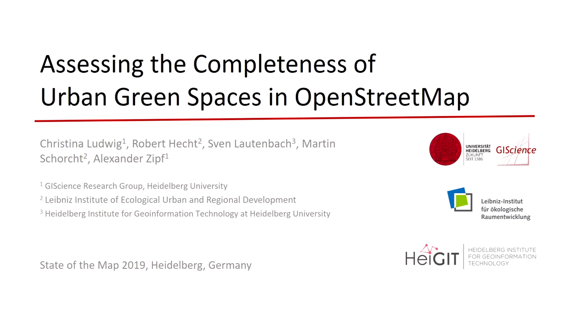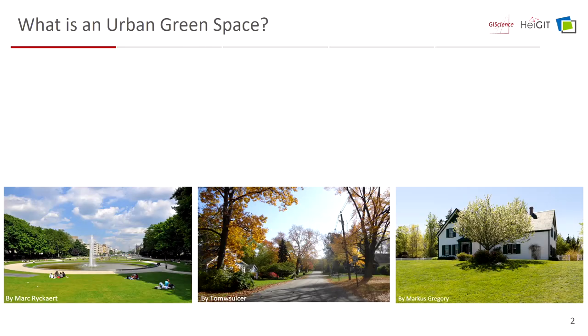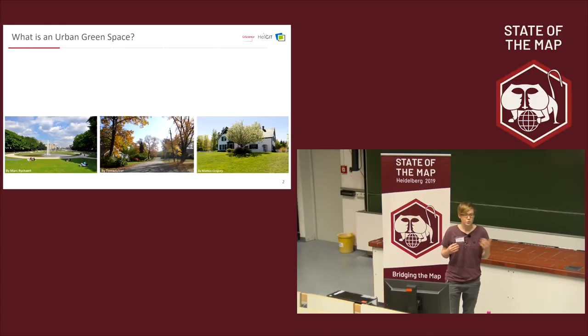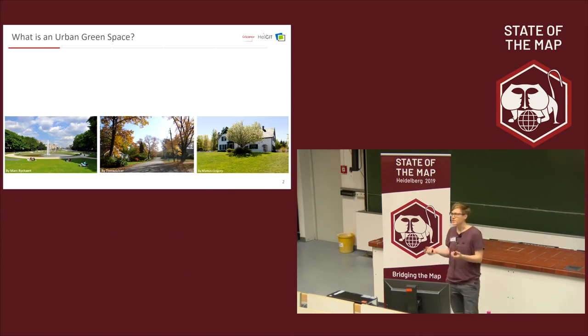I'm going to give you a little insight into urban green spaces in OpenStreetMap and the challenges we faced when trying to assess them. First of all, what is an urban green space? If you take it literally, it could be a public park, roadside greenery, or private gardens. They all provide important ecosystem services like a cooling impact on the urban climate, habitat, and increased biodiversity.